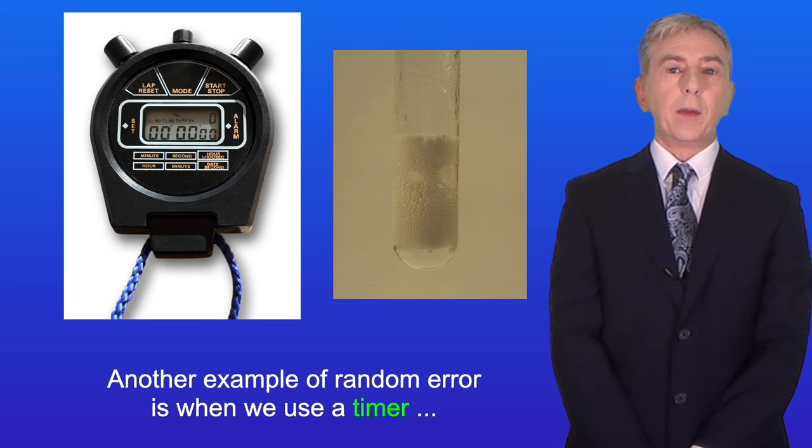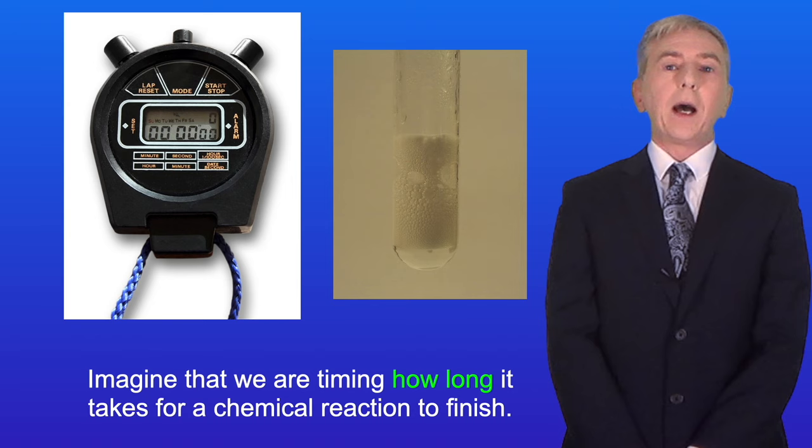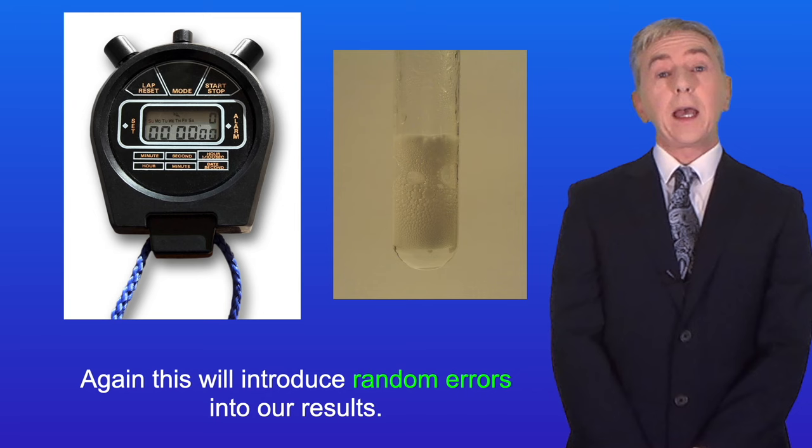Another example of random error is when we use a timer to measure how long something takes to happen. Imagine that we're timing how long it takes for a chemical reaction to finish. Different students have different reaction times and will start and stop the clock at different points, and again this will introduce random errors into our results.